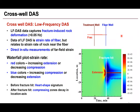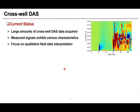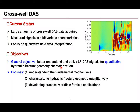The width of the extension strip is relative to the gauge length of the fiber resolution. The compression zone decays as the hydraulic fracture propagates away from the fiber well. Here are recently published crosswell DAS field cases. From these plots, the fracture hit is not very easy to identify, especially for multiple fracture cases. The current status is that large amounts of crosswell DAS data have already been acquired by operators, and measured strain rate responses show various characteristics. Current research is mainly focused on quantitative field data interpretation.